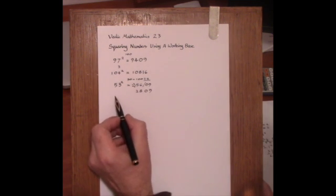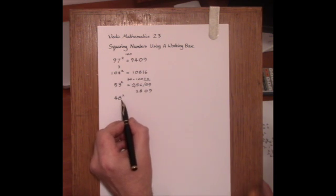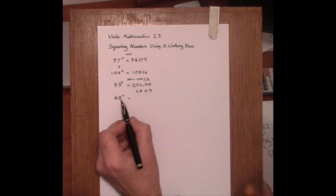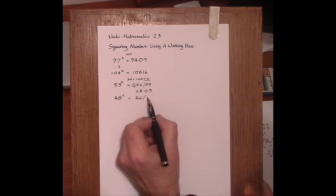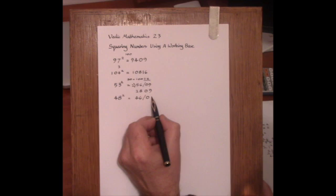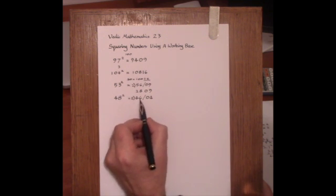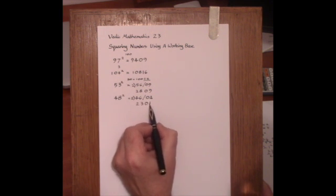And when the number is below the working base like 48 squared, here we have a deficiency of 2, so we reduce 48 by 2 making 46, and then set up the square of the deficiency. 2 squared is 4. Again we divide the left hand part by 2 making 2304, the square of 48.